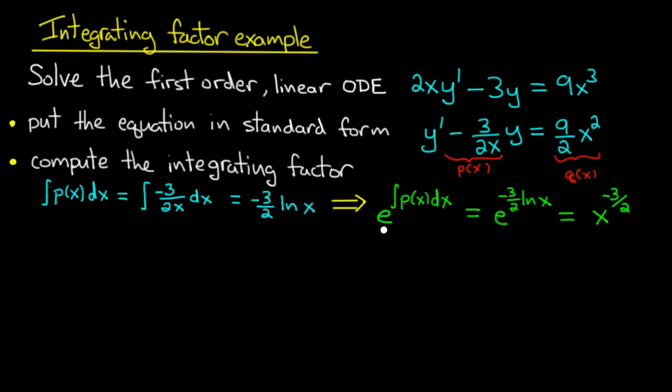So that means e to the antiderivative of p is e^((-3/2)ln x), and if I simplify, that becomes x^(-3/2). At this point we could just use the formula I gave you to write down the solution y in terms of the integrating factor and the function q. But I'd rather finish the problem using the technique we used to derive the formula, and I think you may find that you prefer this way of doing the problem anyway.